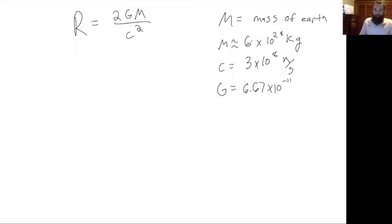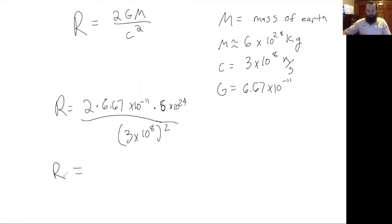If we wanted to find what the radius of the earth would be if it was a black hole, we would plug in these numbers: 2 times 6.67 times 10 to the minus 11 times 6 times 10 to the 24 over 3 times 10 to the 8 squared. If you plug that into your calculator, 0.0089 meters.